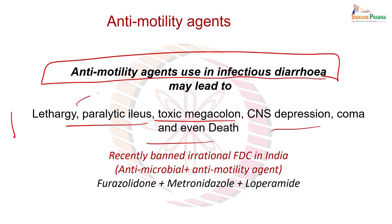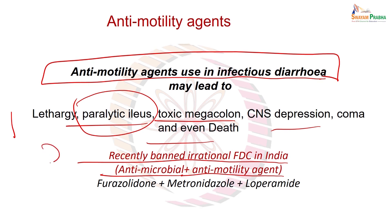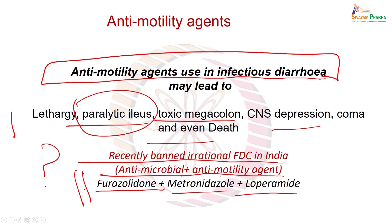Using anti-motility agents in infectious diarrhea may lead to paralytic ileus or toxic megacolon. Recently banned fixed-dose combinations in India pair antimicrobial with anti-motility agents. Giving both simultaneously means microbes are not expelled but retained in the GI tract, acting in reverse directions. Furazolidone plus metronidazole plus loperamide may seem effective — combining an intestinal motility reducer with antimicrobial and antiprotozoal agents — but in totality they act in opposing directions, making this an irrational combination.